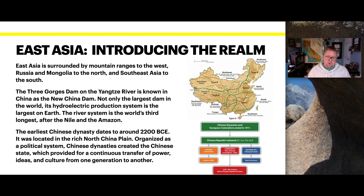The earliest Chinese dynasty dates back about 2200 BC, located in the rich northern China plain. Organized as a political system, Chinese dynasties created the Chinese state, which provided for a continuous transfer of power, ideas, and culture from one generation to another.